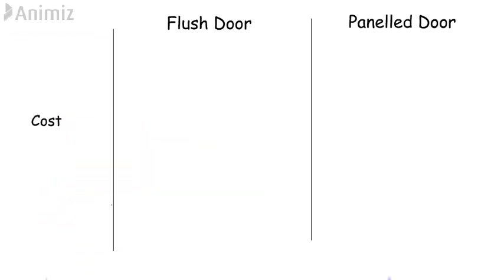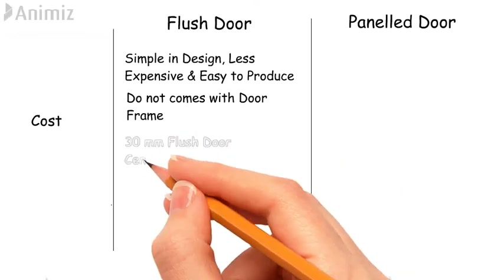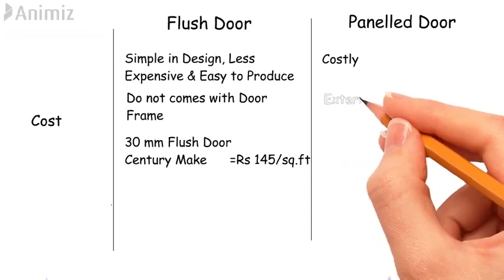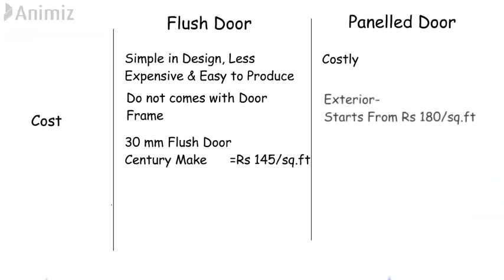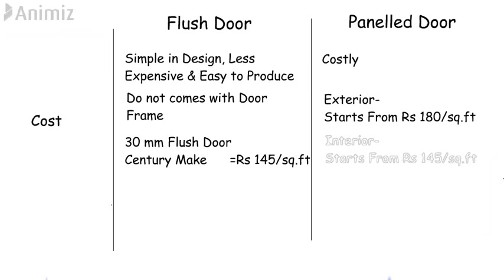Cost: Flush door is simple in design, so it is less expensive and easy to produce. Many times, flush doors do not come with door frames. The rate of a 30mm flush door of Century make is approximately 145 rupees per square feet. Panel doors are costlier as compared to flush doors, as they are made up of natural wood. The rate of a wooden panel door for exterior starts from 180 rupees per square feet and for interior starts from 145 rupees per square feet.